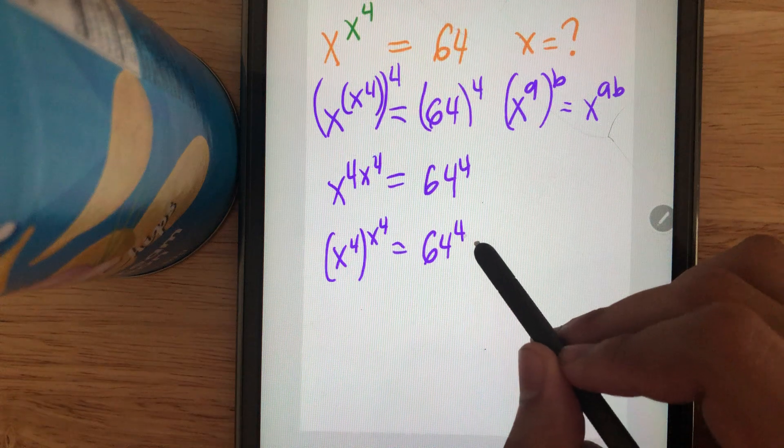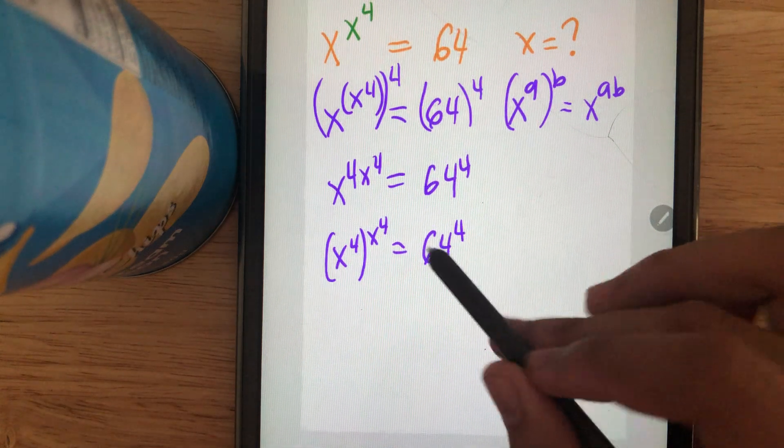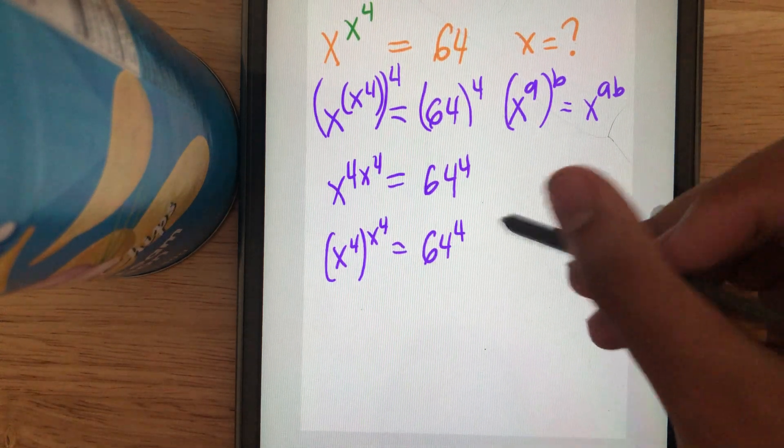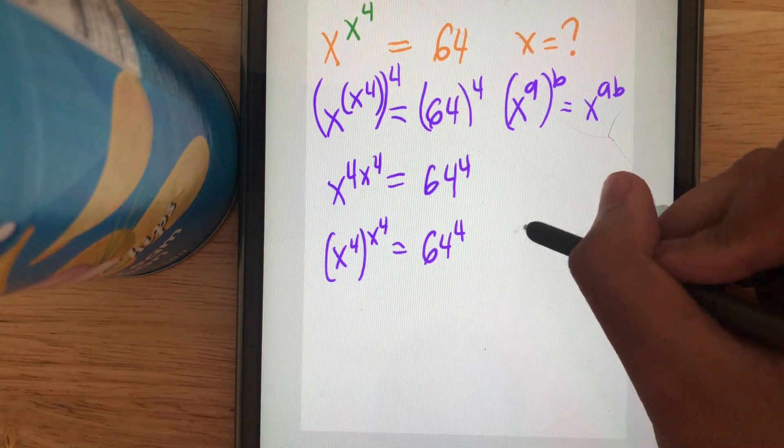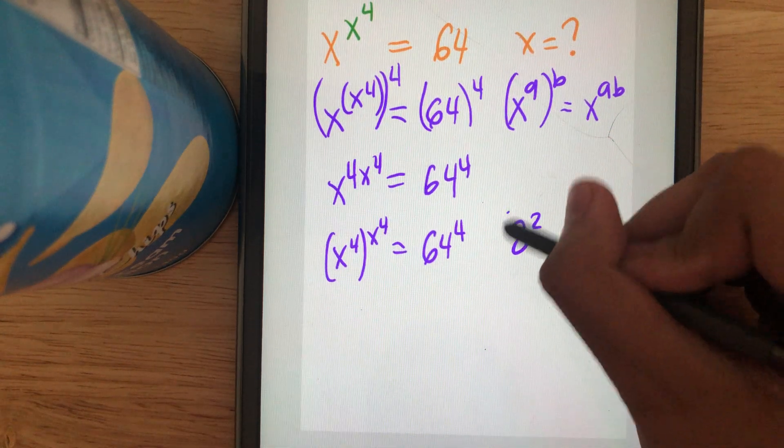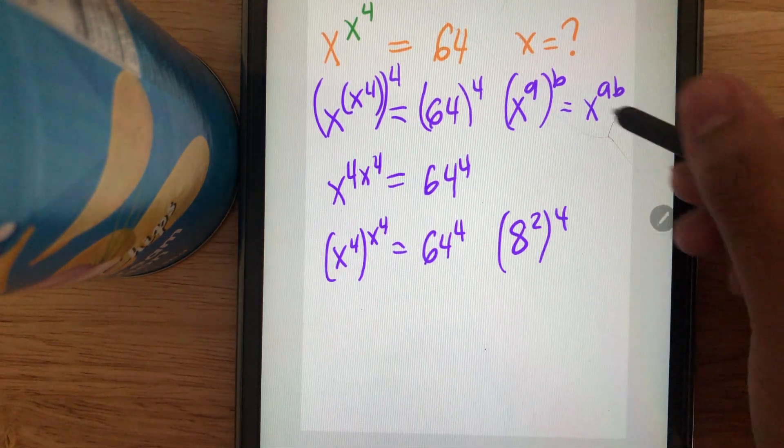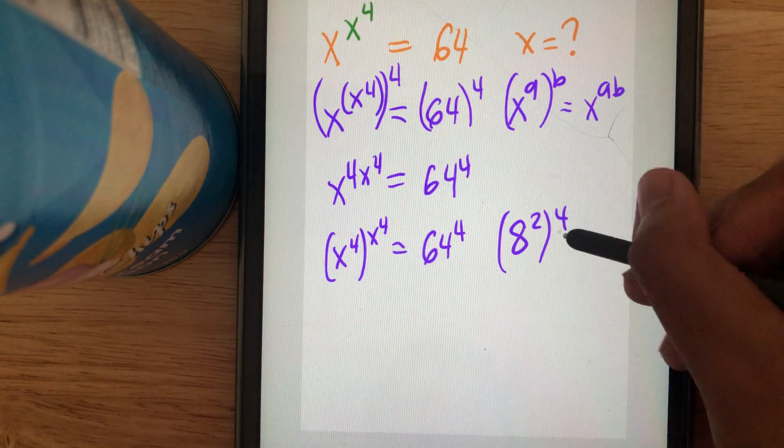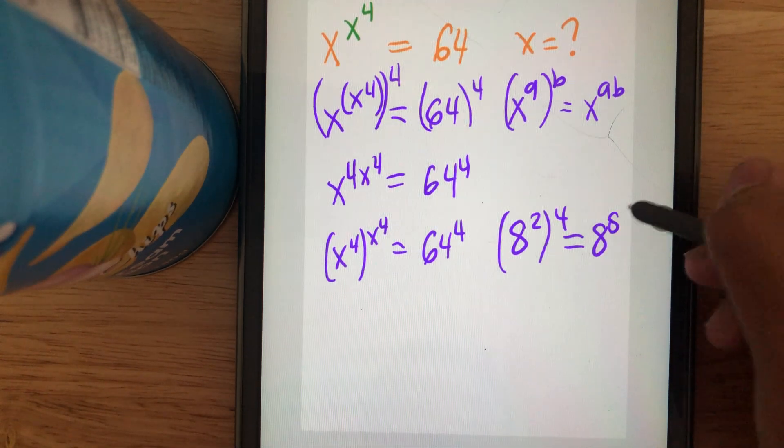Since the base and exponent should be equal, we can try to simplify the base. 64 = 8^2, so 64^4 = (8^2)^4 = 8^8.